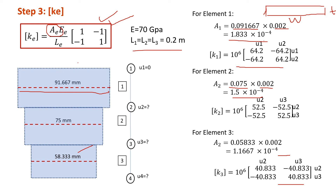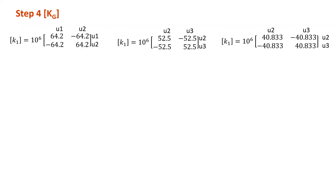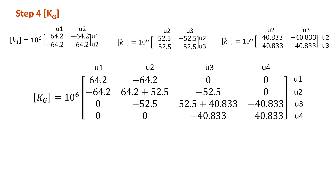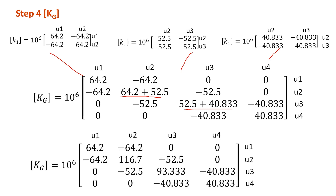Don't forget to include the correct notation in your K matrix. Once we have the stiffness matrix for each element, we can obtain the global stiffness matrix for the whole structure by plugging in all the K matrices into the big matrix and summing contributions at shared nodes.